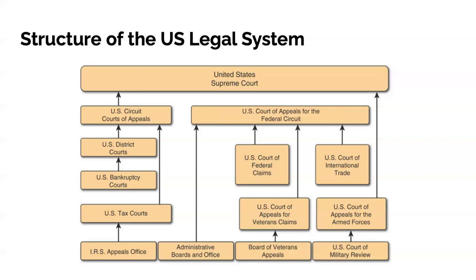During a trial, the prosecution goes first since they have the burden of proof and must prove guilt. The defense must not prove anything. Under the Fifth Amendment, the defendant does not even need to speak during the trial. The two forms of examination are the direct examination — questioning the counsel's own witness — and cross-examination, which is the opposing side examining the witness at a trial.